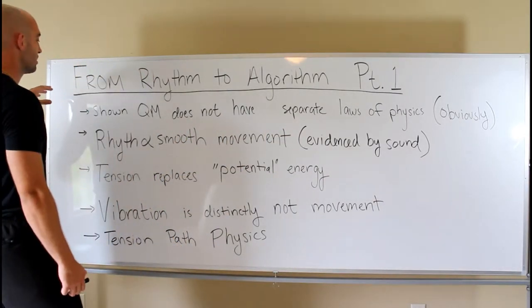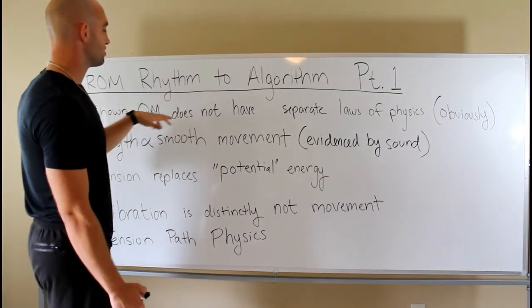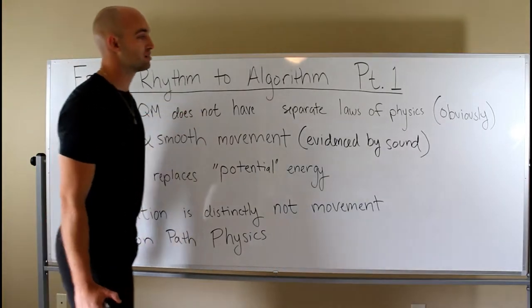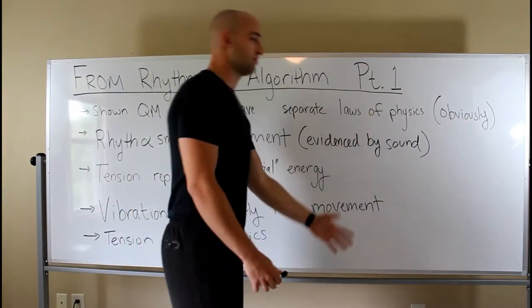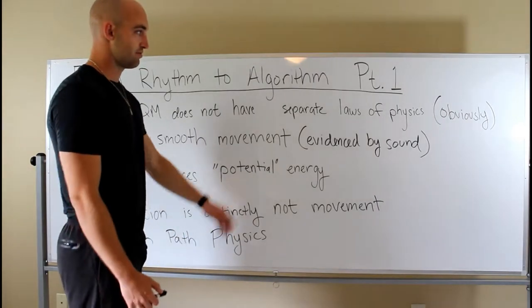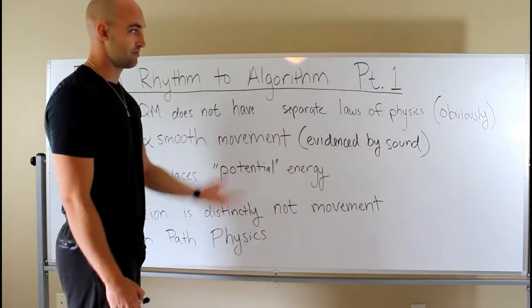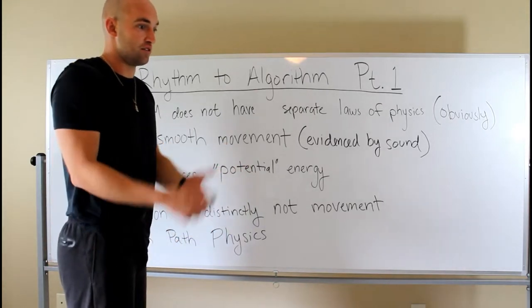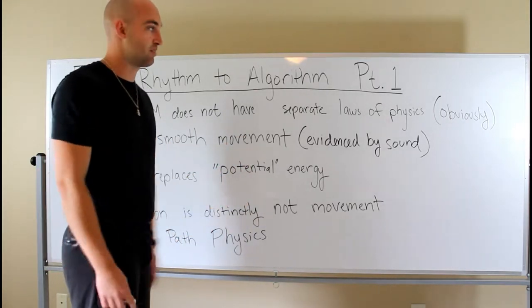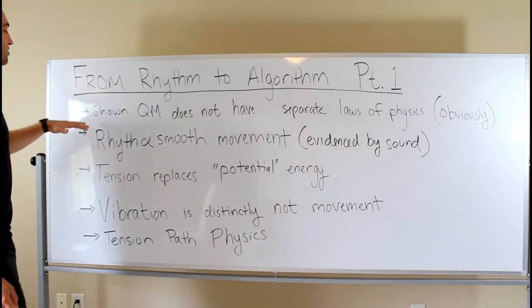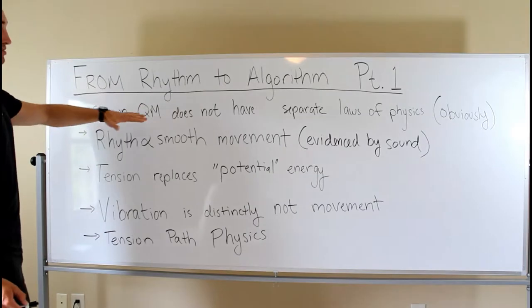But so what we did in the first four lectures is we showed quantum mechanics does not have several laws of physics. And I put obviously, because forget the past 100 years of our research. To think there would be different laws of physics on a small scale, there's no reason to think that to begin with. That's just apes being stupid. But we know that and we've proven that. That's done.